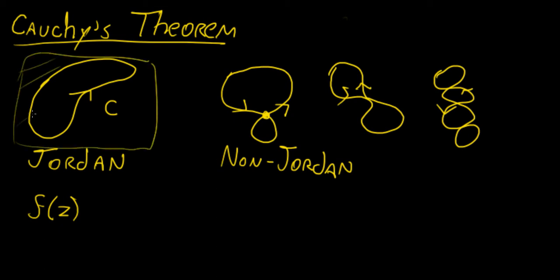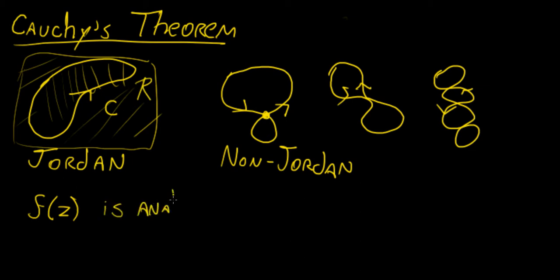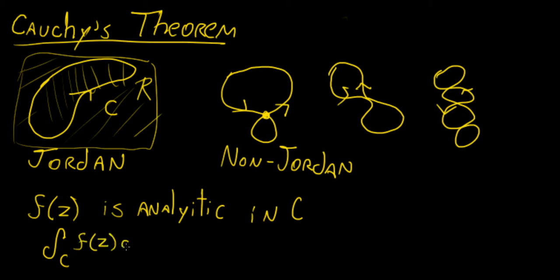Let's call the region something inside that curve. So if F of Z is analytic in C, then we know that the integral along that closed curve is going to be equal to zero. No matter what the function is, as long as this is a Jordan curve and as long as F of Z is analytic, we should get zero for any function that we choose that is analytic.